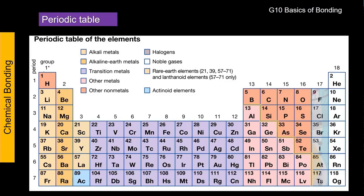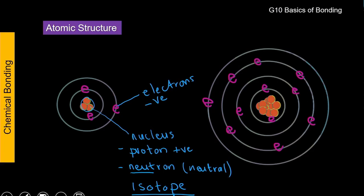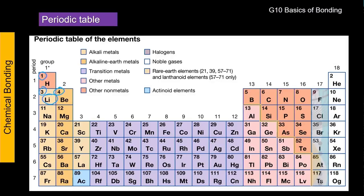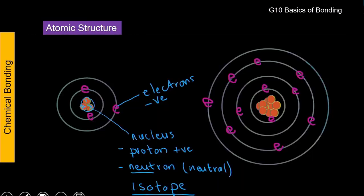If we go back to our periodic table, we'll see what is called the atomic number. These numbers tell us how many protons we can find in the nucleus of this specific element's atoms. If we look at this atom I've drawn here and count: one, two, three — we've got three protons in the center. Going back to the table: that's lithium. So lithium has got three protons in its nucleus; its atomic number is three. That tells us that if we're dealing with a neutral atom, we have to have three electrons — they have to balance.